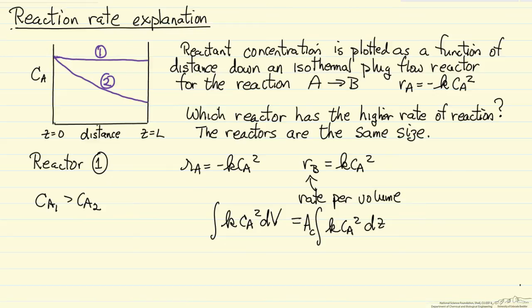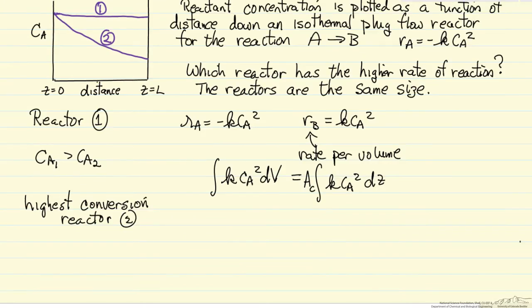If the question is which reactor has the highest conversion, the highest conversion now is reactor 2. So the question might be how we obtain these two conditions. And if it's the same reactor and isothermal, then the molar flow rate of A entering reactor 1 must be much greater than the molar flow rate of A entering reactor 2. So that a smaller fraction of the feed is converted, even though the rate of reaction is higher. Because of the high flow rate, the percentage converted is smaller.